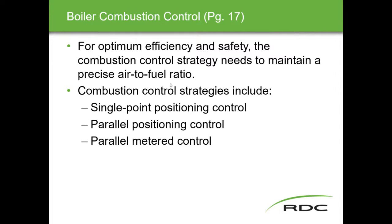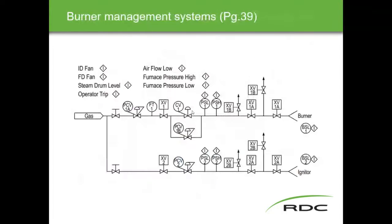Moving to boiler combustion control. For optimum efficiency and safety, the combustion control strategy needs to maintain a precise air-to-fuel ratio. We'll look at three combustion control strategies: single point positioning control — the simplest form; parallel positioning control — basically the same with a couple of different machines; and parallel metered control — the most advanced version.